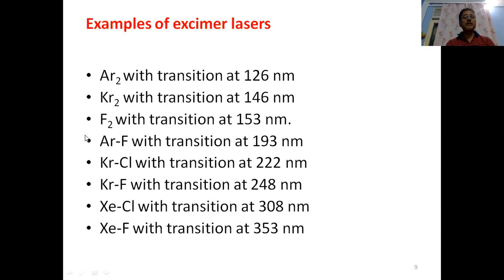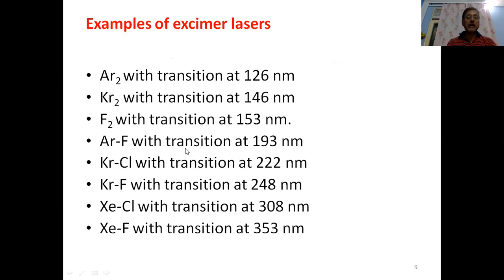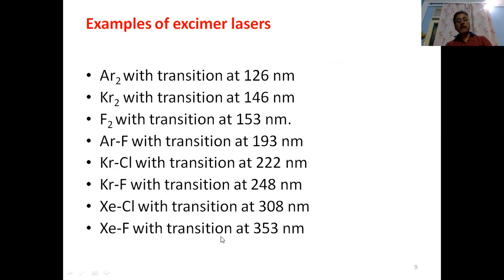Examples of excimer lasers include: Ar2 at 126 nm, Kr2 at 146 nm, F2 at 153 nm, ArF at 193 nm, KrCl at 222 nm, KrF at 248 nm, XeCl at 308 nm, and XeF at 353 nm.